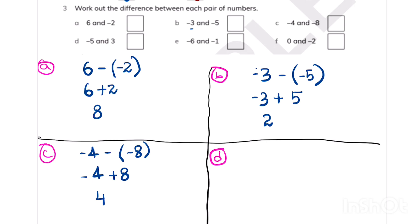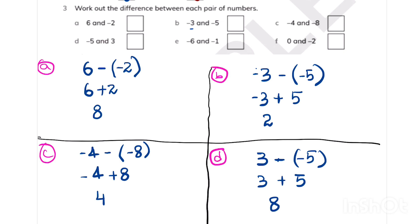Moving on to part D: minus 5 and 3. Which is bigger? 3 is bigger, so we write 3 first, then the minus sign, then minus 5. Minus minus equals plus, so 3 plus 5 is 8.